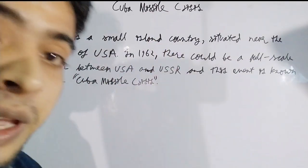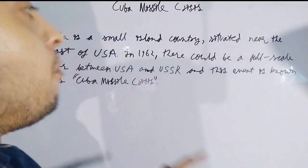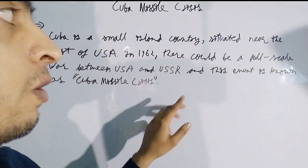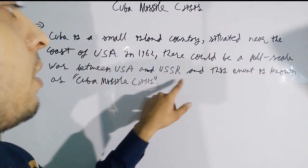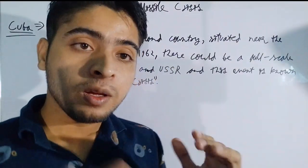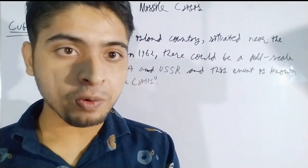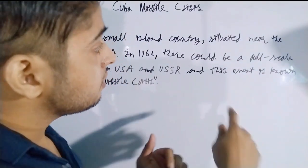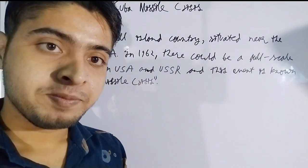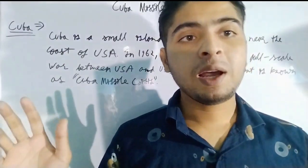Cuba is very near to the USA. In 1962, there could have been a full-scale nuclear war between USA and USSR, but it didn't happen. This event is known as the Cuba Missile Crisis — a situation where a full-scale nuclear war could have occurred but didn't.